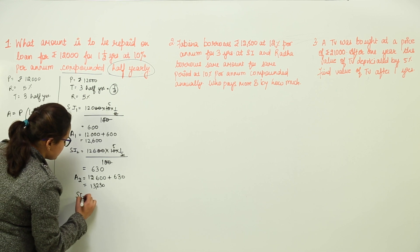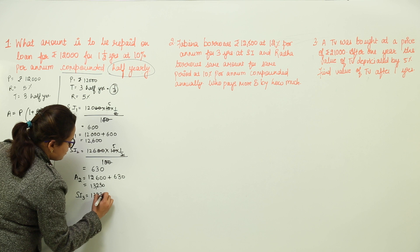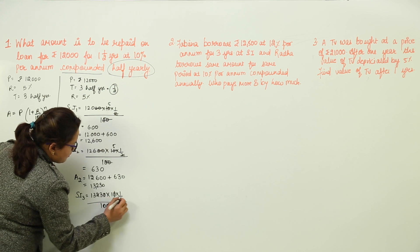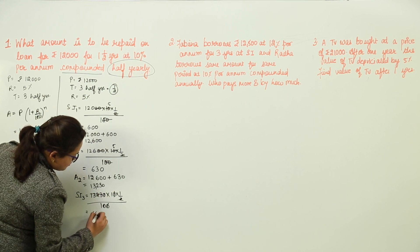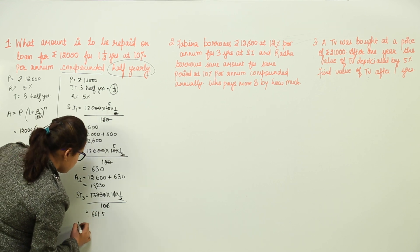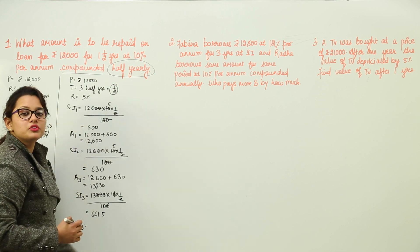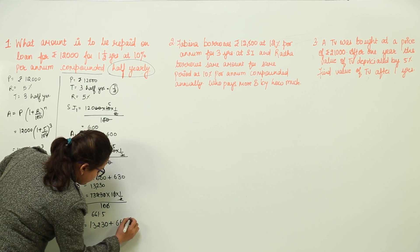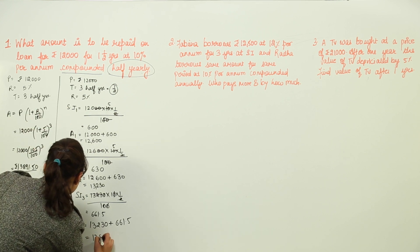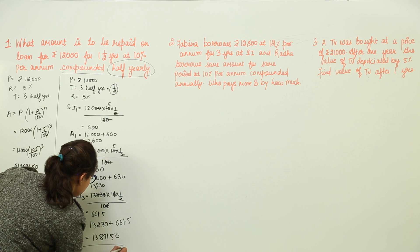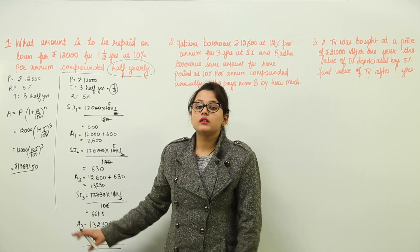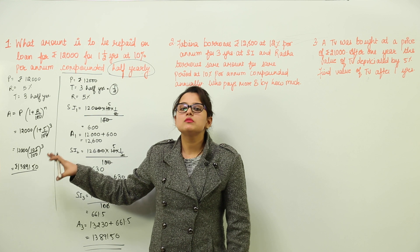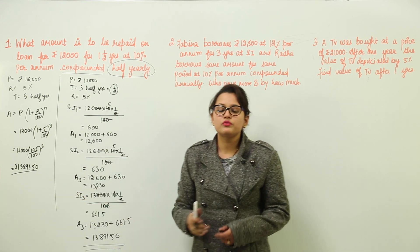For the third half year, simple interest = 13,230 × 10 × (1/2) / 100 = 661.5. The final amount = 13,230 + 661.5 = Rs. 13,891.50. Both methods give the same answer. The formula saves time, so whenever possible, please use the formula directly.